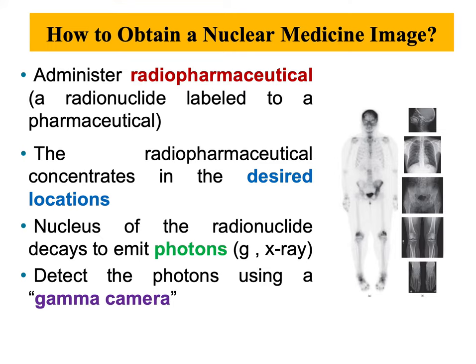Then the nucleus of the radionuclide decays to emit photons — either gamma rays or x-rays — and you can detect the photon using the gamma camera. This is the instrumentation used in nuclear medicine imaging that I will be talking about today. So this is a quick overview: you start by administering the radiopharmaceutical agent and then detecting the photons using the gamma camera.